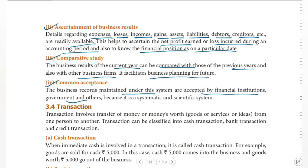All companies use this system to record transactions. It is totally important because it is systematic and scientific. From start to end, the same method is used, so there are no problems. You can cross-check everything, and any problems or losses in the company can be clearly identified.